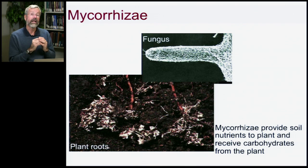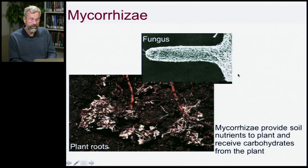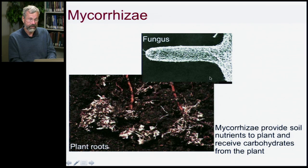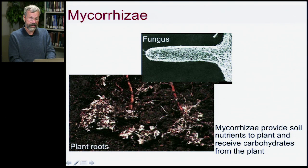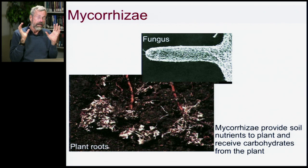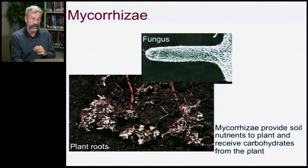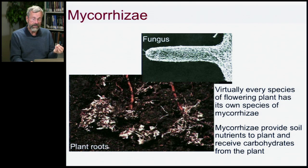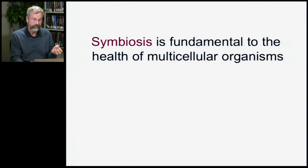Mycorrhizae are extraordinary — a symbiotic relationship between plants and fungi. The fungus, with its mycelia — those tiny little tendrils — enshrouds the individual roots of a plant. They deliver soil nutrients to the plant by extracting minerals from the dirt, and in exchange they receive carbohydrates from the plant. If you pull up a flowering plant, you'll see cottony material around the roots — that's the mycorrhizae, the fungus. This is so important for plant nutrition that almost every species of flowering plant has its own species of mycorrhizae. Symbiosis, then, is fundamental to the health of multicellular organisms.